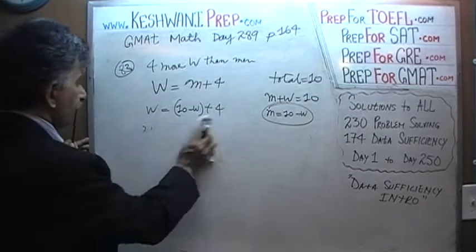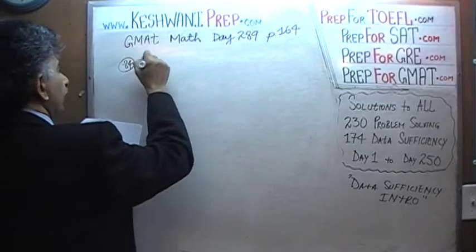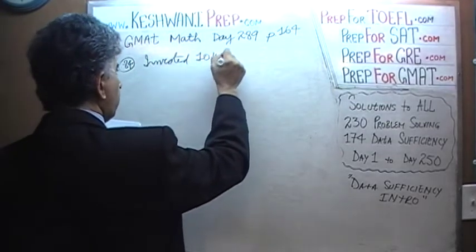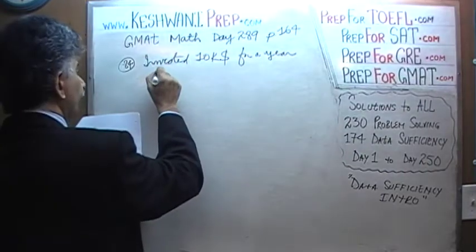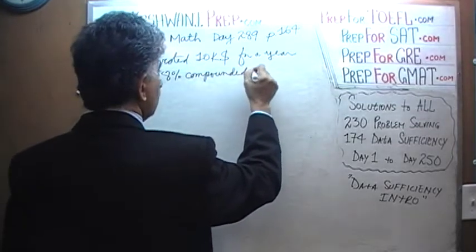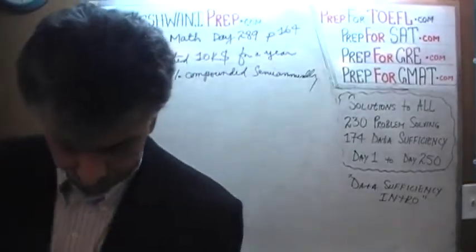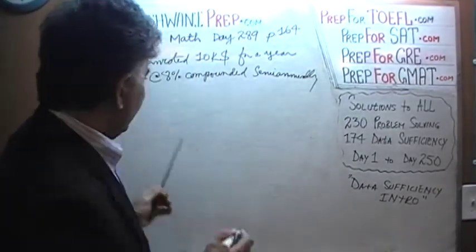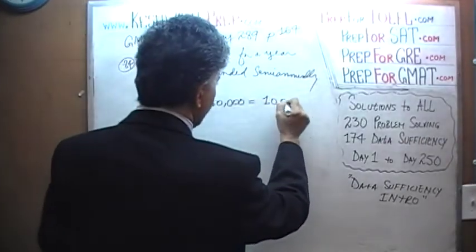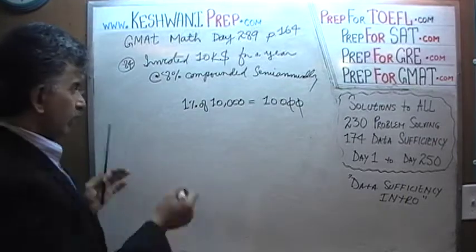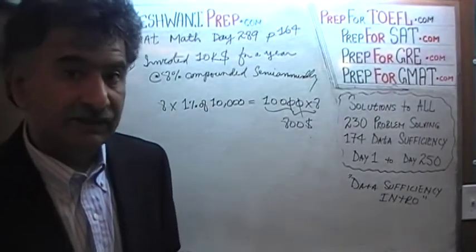Next problem: we are investing $10,000 for a year at 8% compounded semi-annually. The question is how much interest we are going to earn. Eight percent of $10,000 — one percent of ten thousand is $100, so eight percent would be $800. Now, the fact that interest is being compounded means we earn a little bit more than $800.